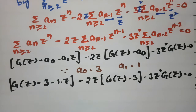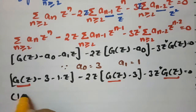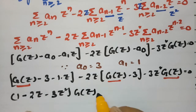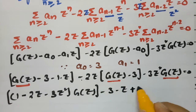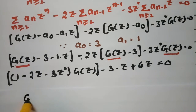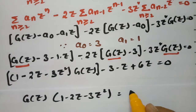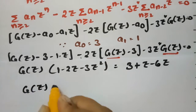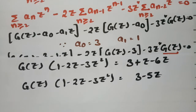Taking G(z) common, the equation becomes G(z) times (1 minus 2z minus 3z²) equals 3 minus 5z. So G(z) times (1 minus 2z minus 3z²) equals 3 minus 5z.